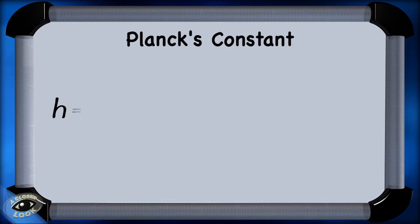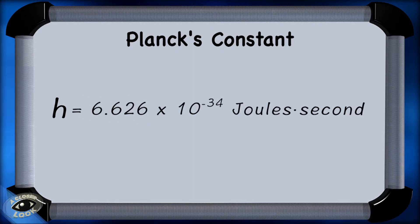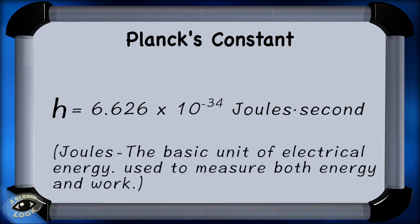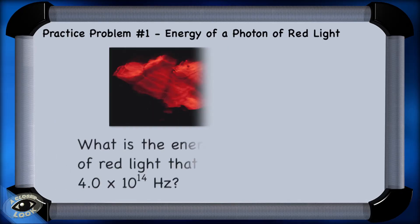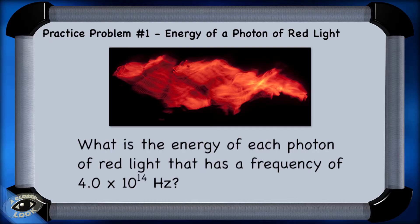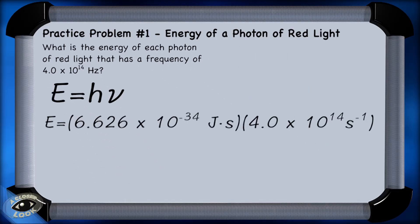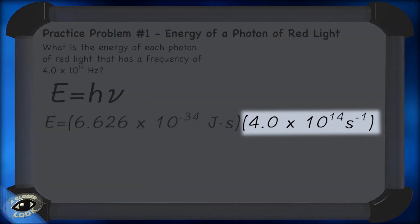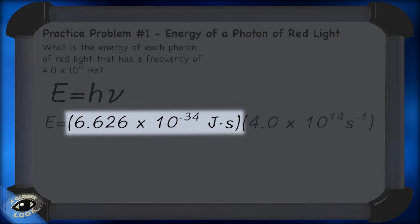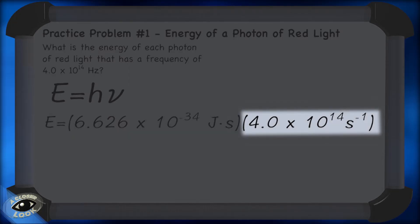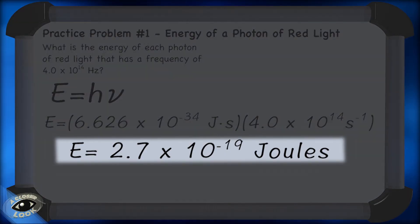H in Planck's equation is Planck's constant, with a value of 6.626 times 10 to the negative 34th joules times seconds. So if we know the wavelength or frequency of light, we can calculate the energy in one photon of that light. Our first practice problem asks us to solve for the energy of a photon of red light whose frequency is 4.0 times 10 to the 14th hertz. Using Planck's equation and multiplying Planck's constant by the frequency, we find that the energy of a photon of red light is 2.7 times 10 to the negative 19th joules.